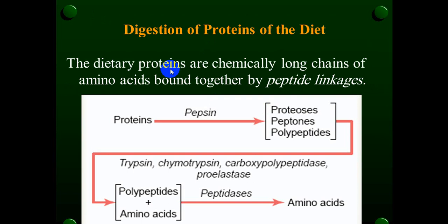The second part of food is protein — the digestion process of protein. Protein will be digested initially by pepsin. Pepsinogen is secreted by the stomach and is inactive unless there is high acidity, reaching a pH of 2 to 3. This converts pepsinogen into active pepsin, which digests protein into proteoses, peptones, and polypeptides.